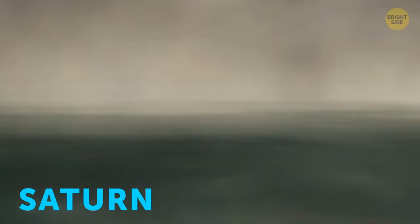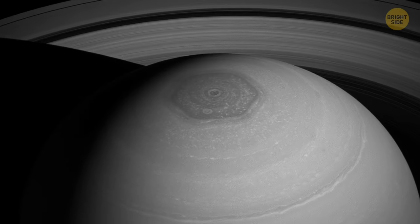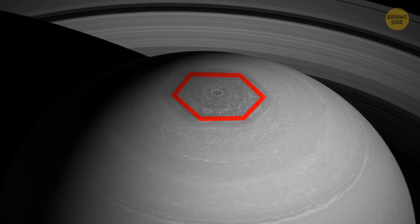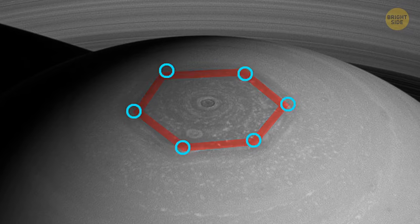Saturn also has a never-ending storm, just like Jupiter, but it's also peculiar for its shape. It has six distinct sides.